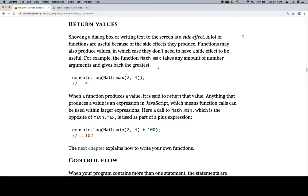Functions may also produce values, in which case they don't need to have a side effect to be useful. For example, the function Math.max takes any amount of number arguments and gives back the greatest.